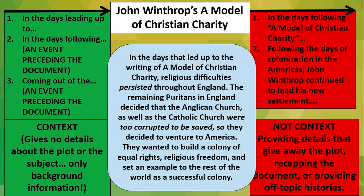Let's end with a decent example. In the days that led up to the writing of 'A Model of Christian Charity,' religious difficulties persisted throughout England. The remaining Puritans in England decided that the Anglican Church, as well as the Catholic Church, were too corrupted to be saved, so they decided to venture to America. They wanted to build a colony of equal rights and religious freedom, and set an example to the rest of the world as a successful colony. They are setting the stage for that particular document. I hope this makes a lot of sense. If you still have any remaining questions, please feel free to contact me — I'd be glad to help. Thank you for watching.